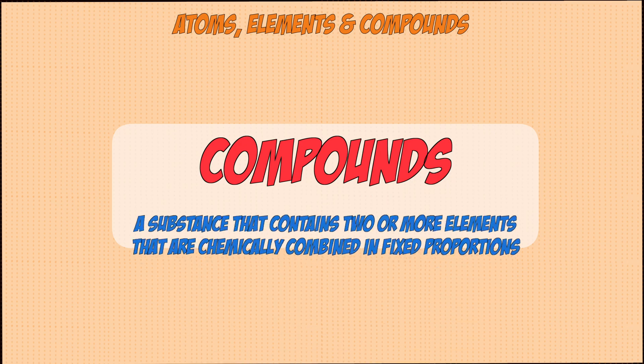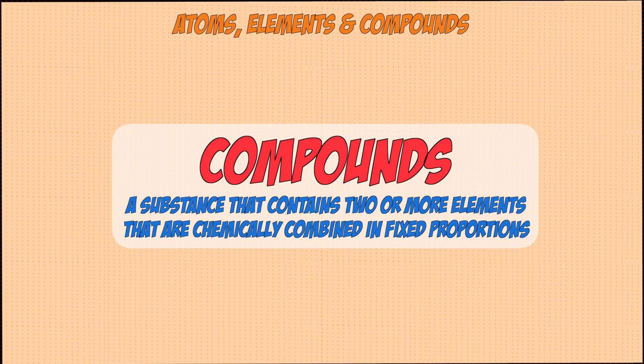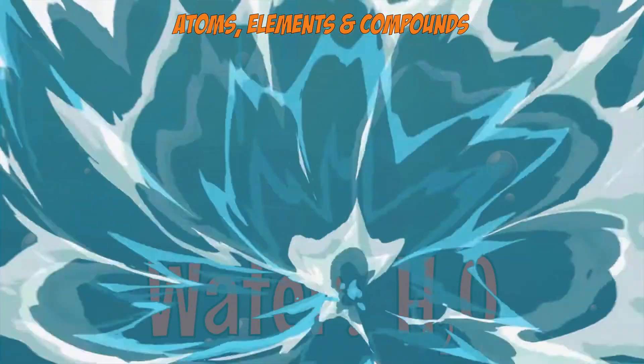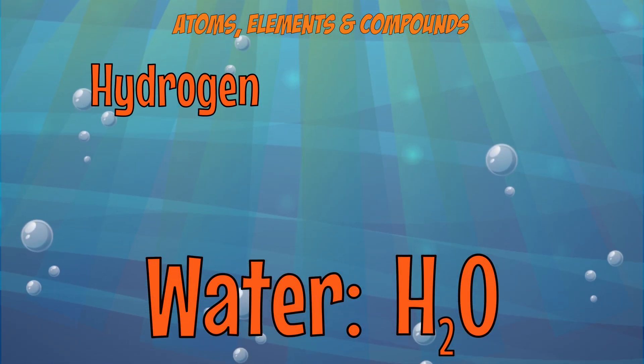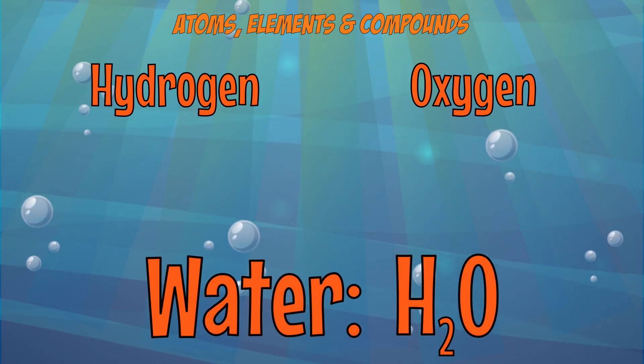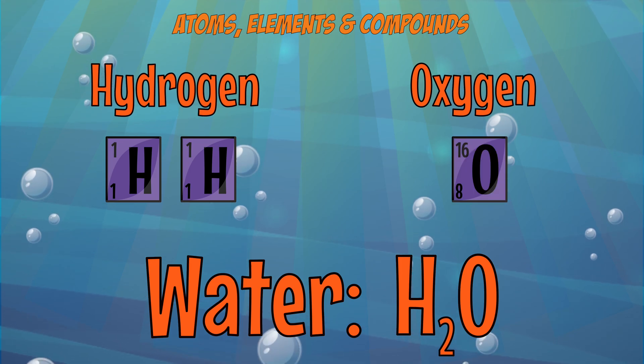Compounds on the other hand contain two or more elements that are chemically combined in fixed proportions. Water for example is made out of the element hydrogen and oxygen in fixed proportions of two hydrogens and one oxygen.